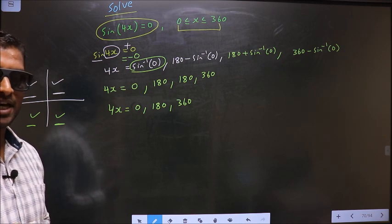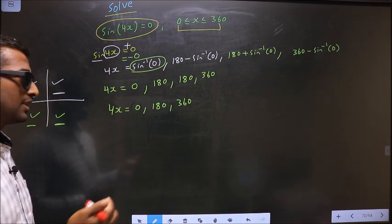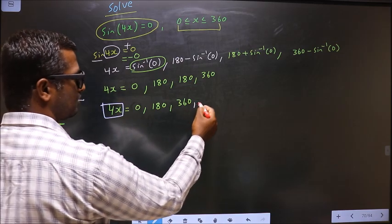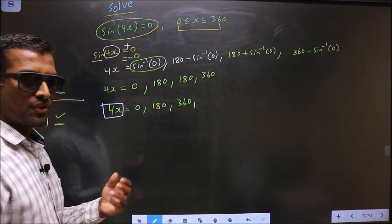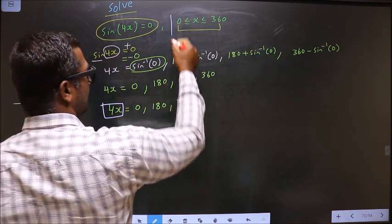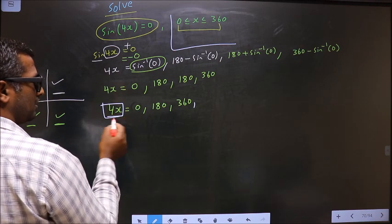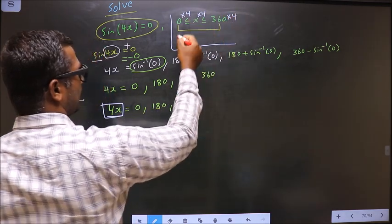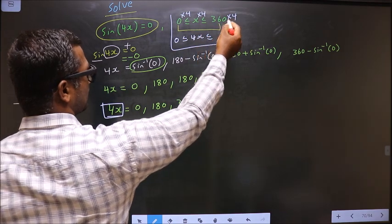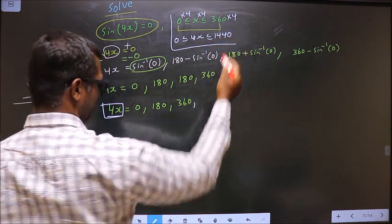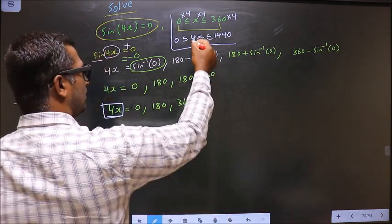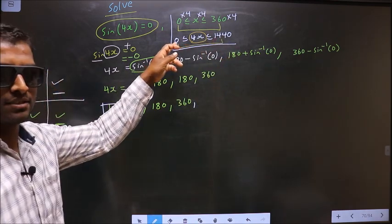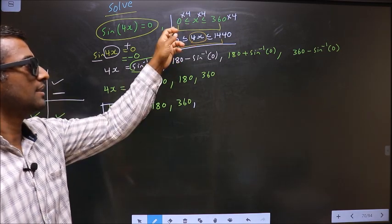Now the question is: in what interval should the values for 4x lie, and how many values should we find? Since x lies in [0°, 360°], we multiply by 4 to get the interval for 4x: 0 ≤ 4x ≤ 1440°. The values of 4x must lie in this interval, and then the values of x will automatically lie in the original interval.